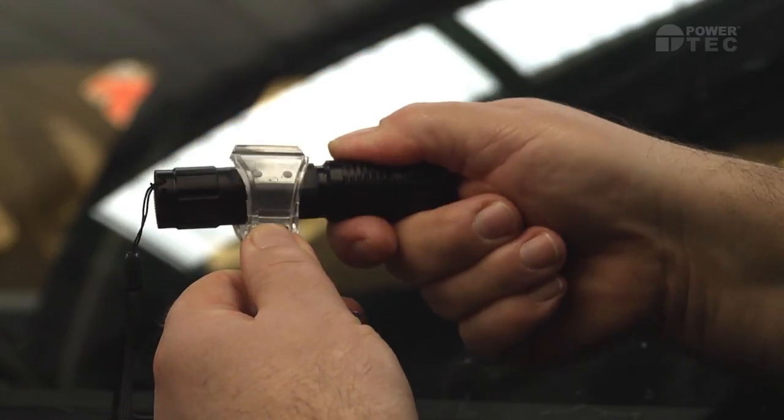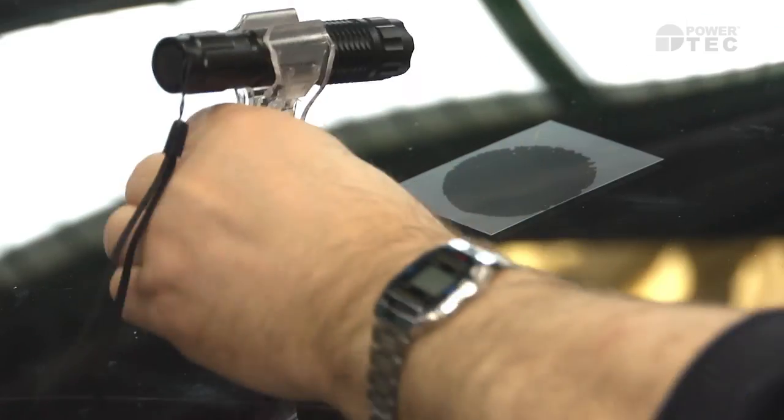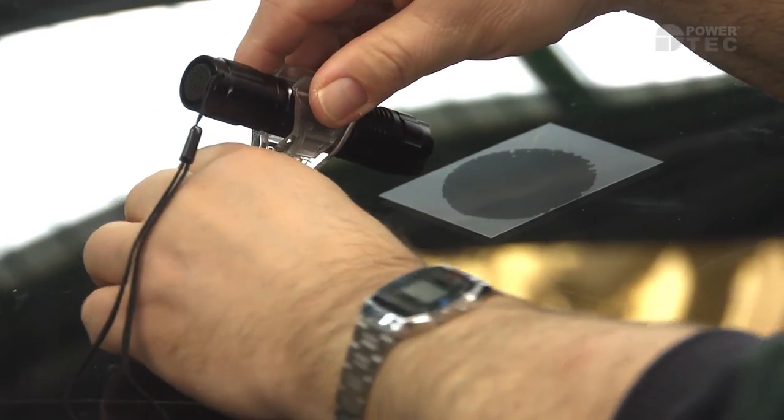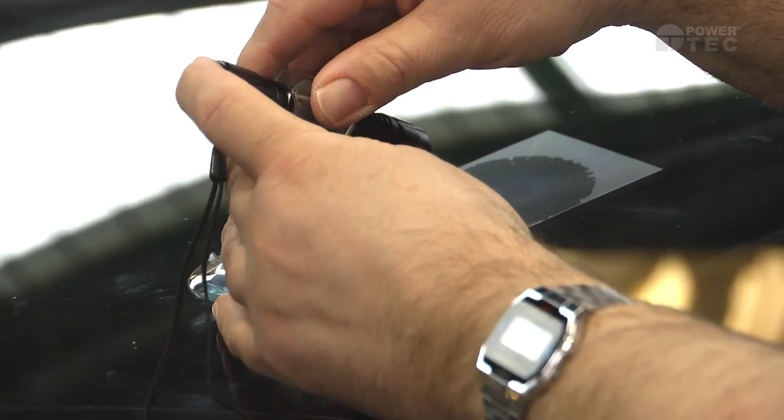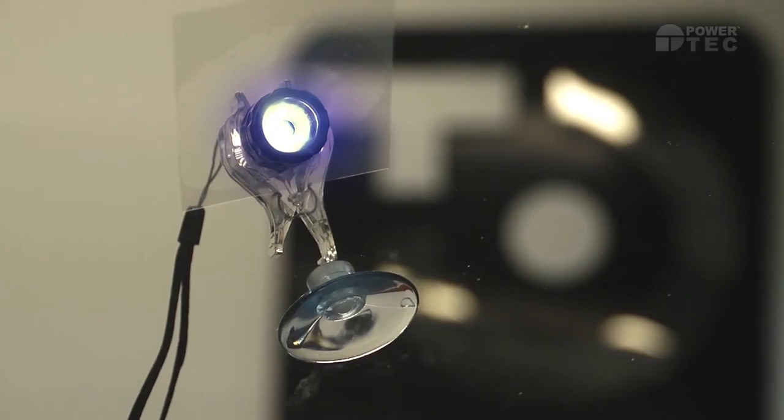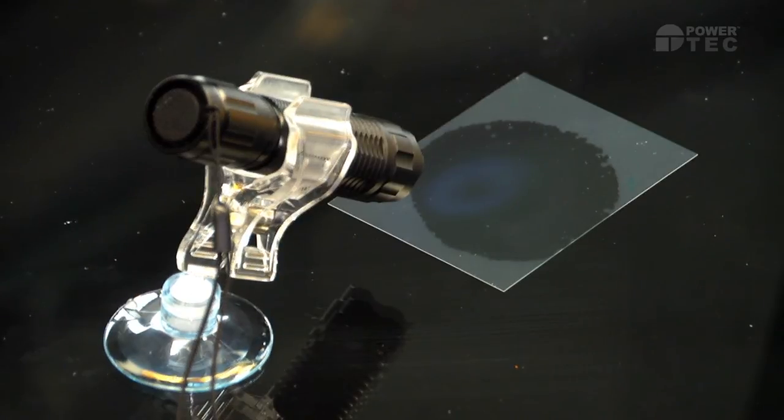The resin will now be cured by UV light. Assemble the UV torch to the suction cup bracket. Position the torch over the repair, shining onto the curing film. Curing will take 10 to 15 minutes.